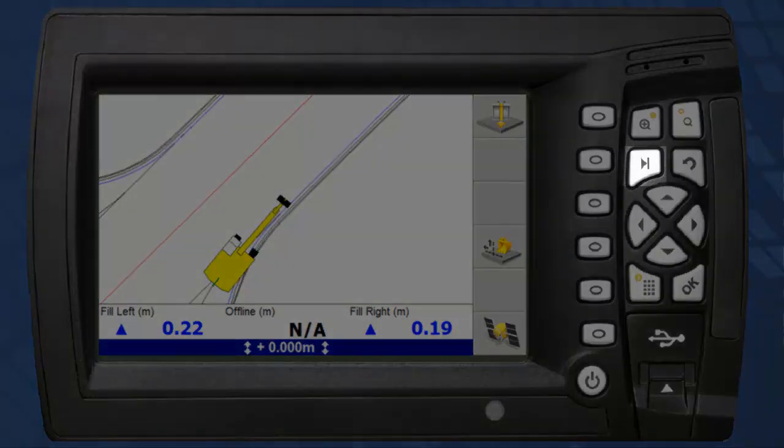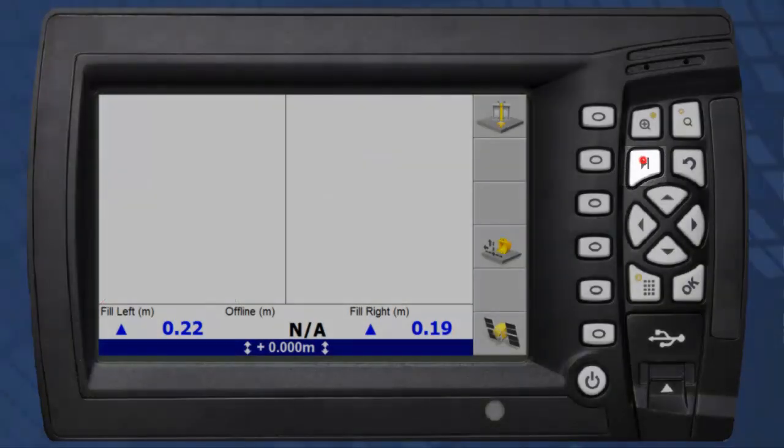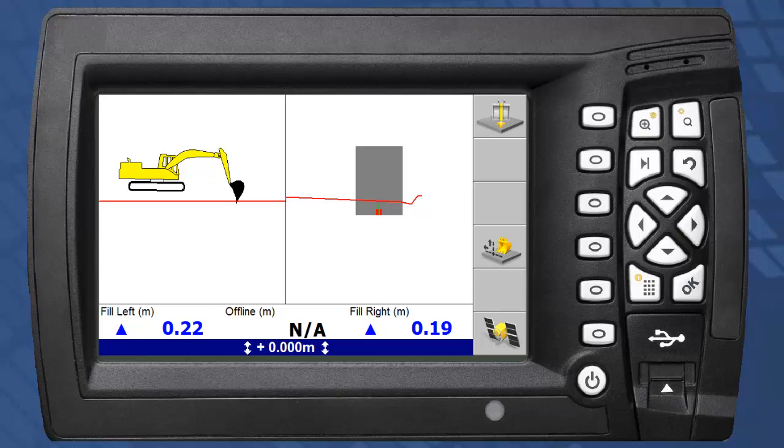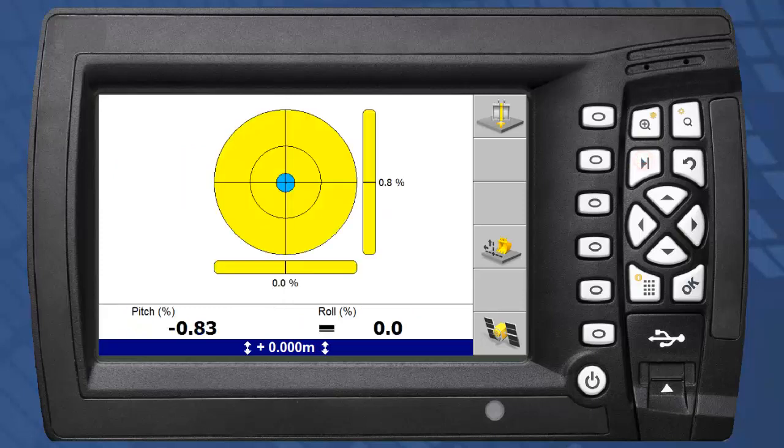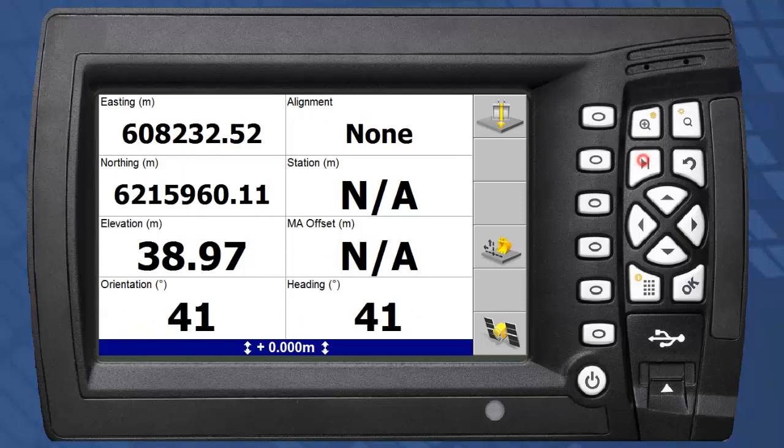The next key will tab you through the various views. The views available, and the information displayed on them, will vary depending on the machine type and how the system has been configured for the operator.